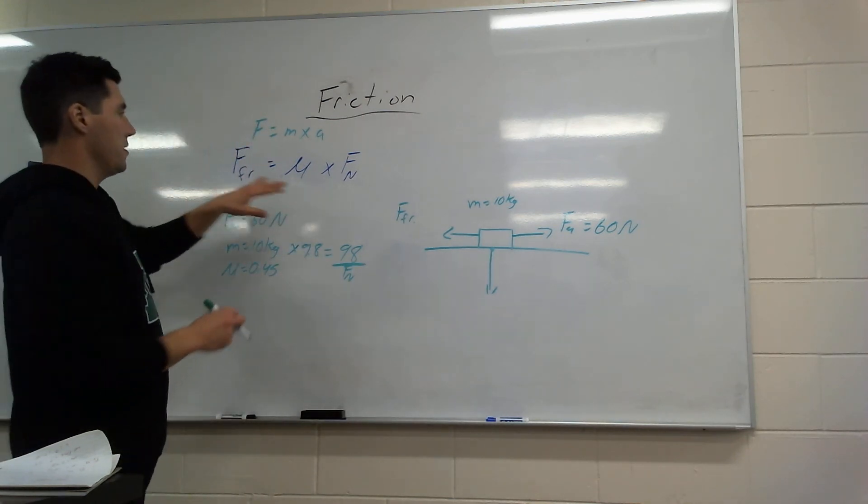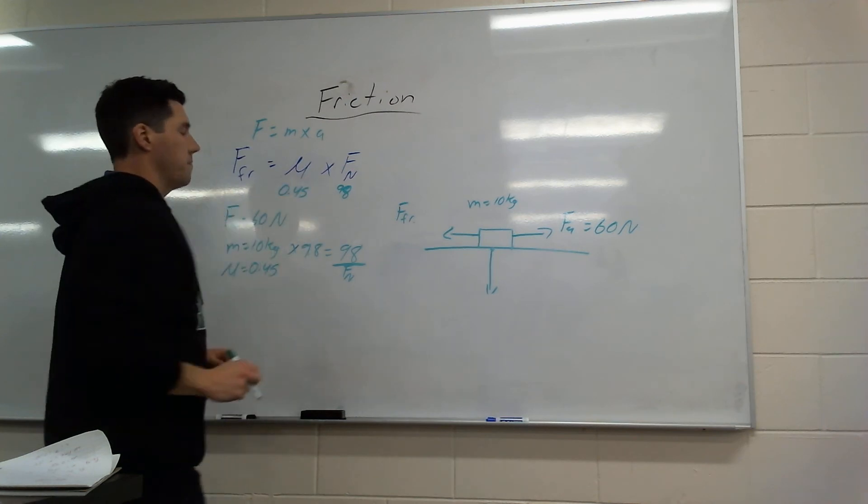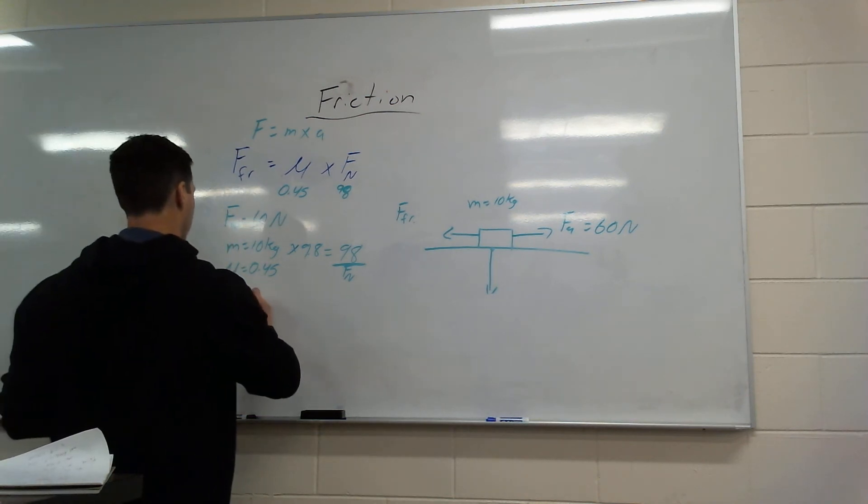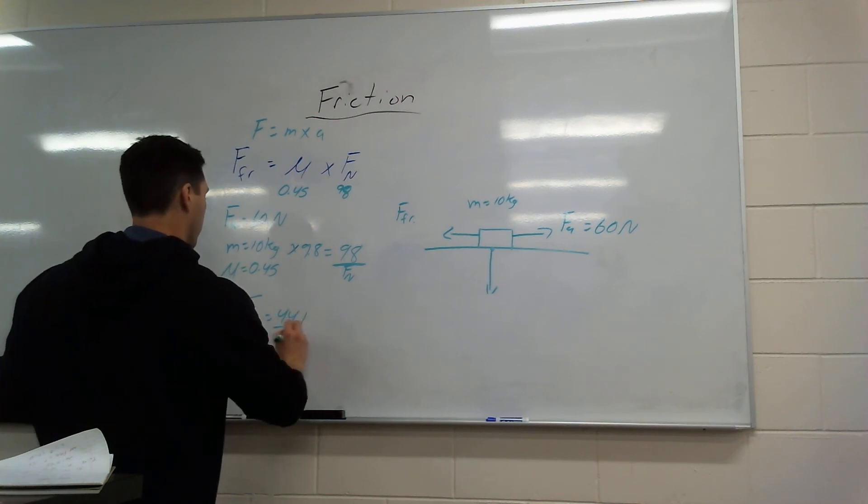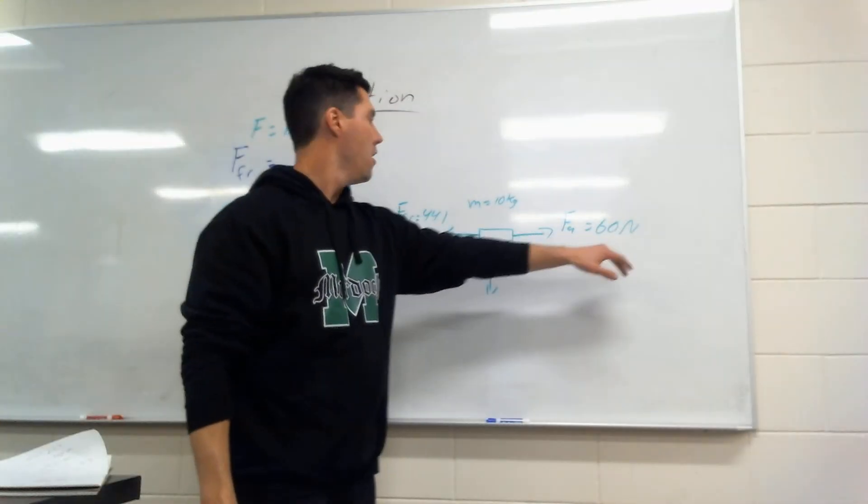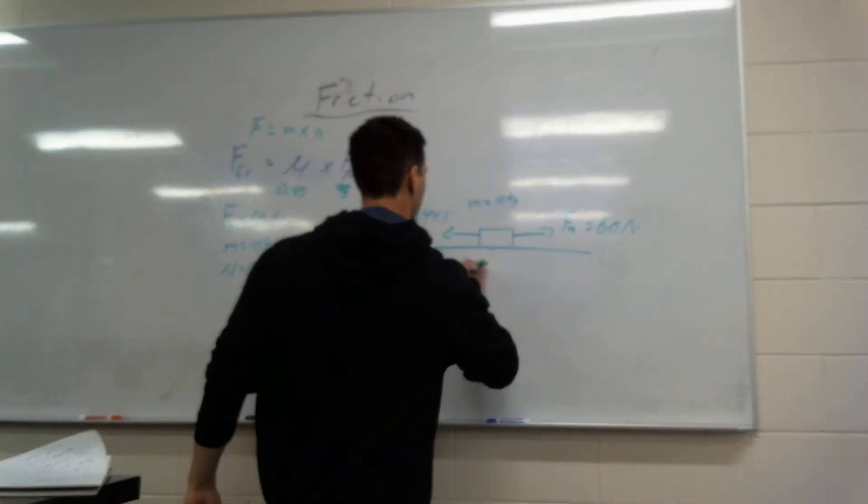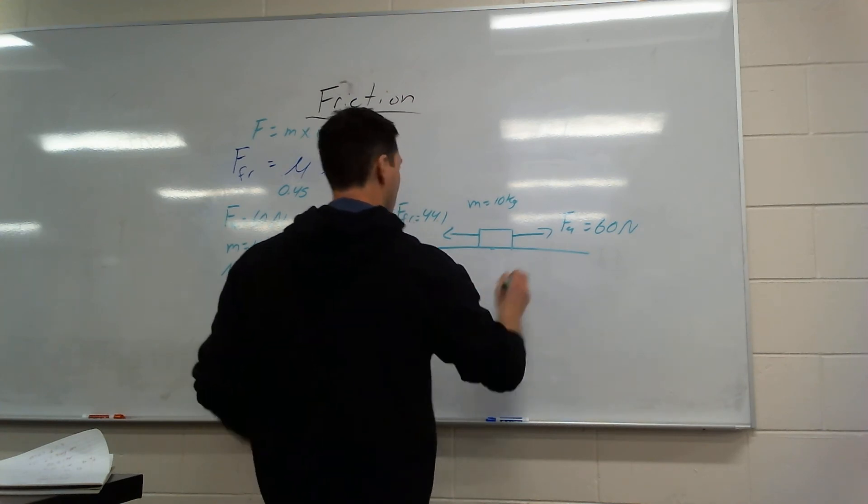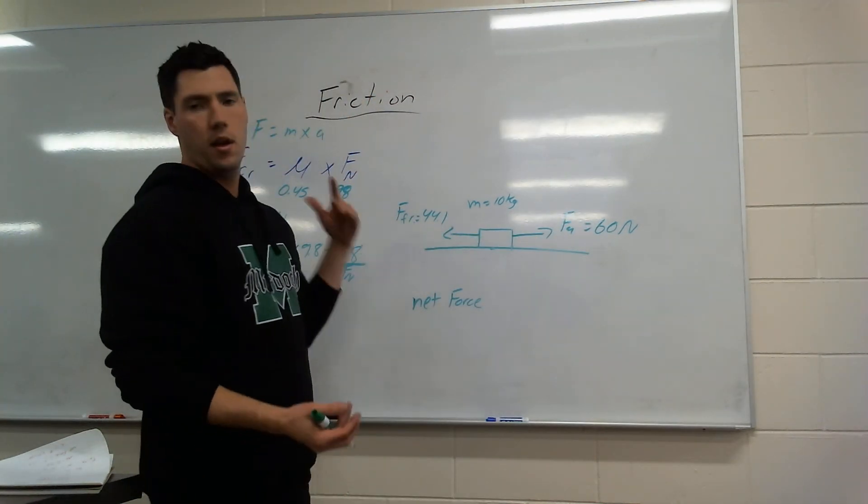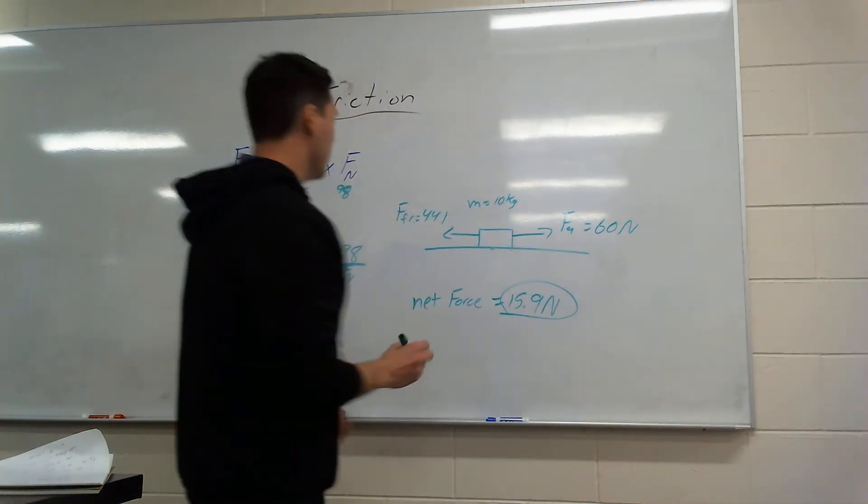To find force of friction, I'm going to take that 98 and times it by 0.45. So when I do that, I get a force of friction of 44.1. So if I'm pulling with 60 newtons, force of friction is stopping me by 44.1. What's my net force? Who's winning by how much? Well, my force applied is bigger. So I'm going to go 60 minus 44.1, and I get a net force of 15.9. There's my net force. There's my first step of the question.